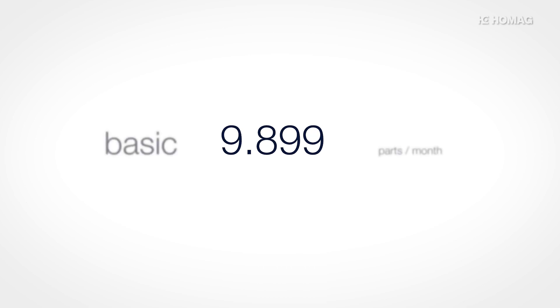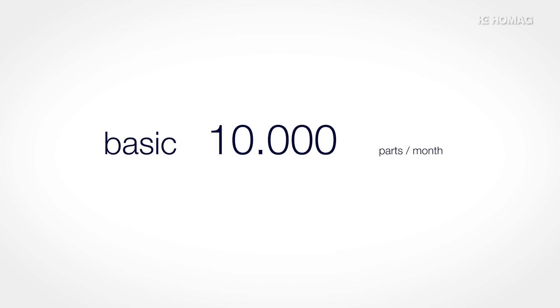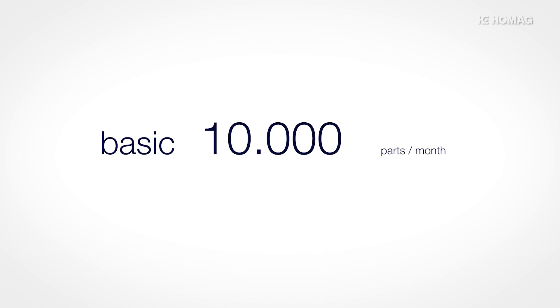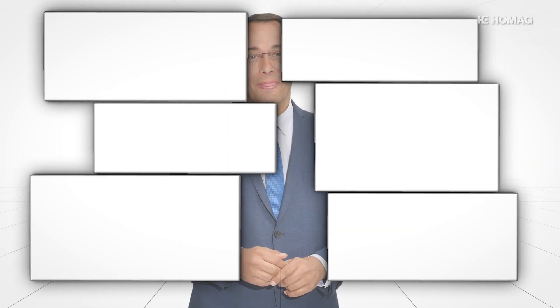There are two subscription options available for IntelliDivide. Basic, for up to 10,000 parts per month — ideal for smaller businesses that only want a few optimizations. Advanced, for up to 100,000 parts per month — perfect for larger companies that want to use the full computing power of the cloud. And if at any time there is more to do than usual, you can easily and quickly increase the amount you booked.